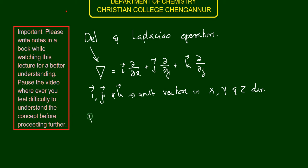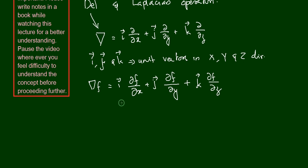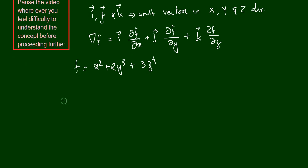When this del operator operates on some function f, then del f is equal to i ∂f/∂x plus j ∂f/∂y plus k ∂f/∂z. Let us check with a simple function to understand how this operator works. Let's take the function f = x² + 2y³ + 3z⁴.